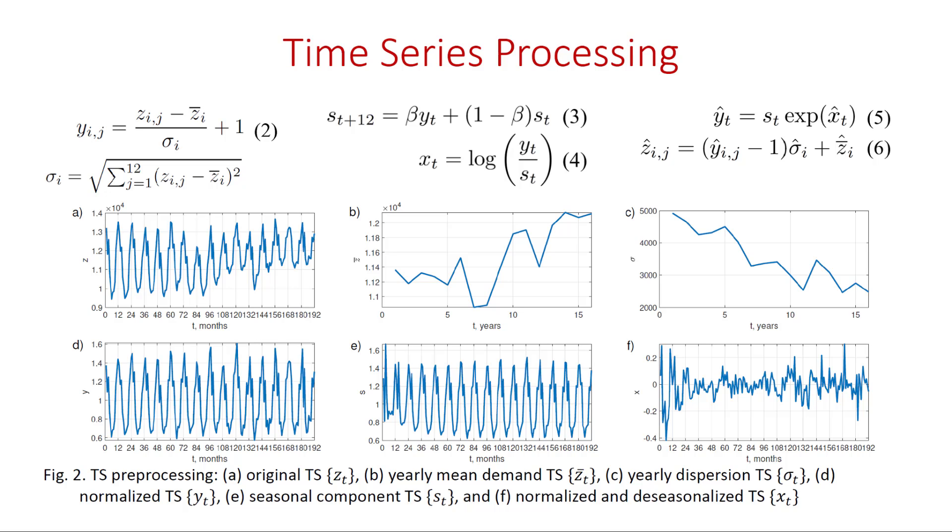Figure 2a shows the original time series, monthly electricity demand. And figures 2b and 2c show extracted yearly mean and dispersion respectively. After removing the mean and dispersion from the time series we obtain normalized time series shown in figure 2d. This time series is further deseasonalized. Seasonal component is shown in figure 2e. Normalized and deseasonalized time series is forecasted by RDLSTM.